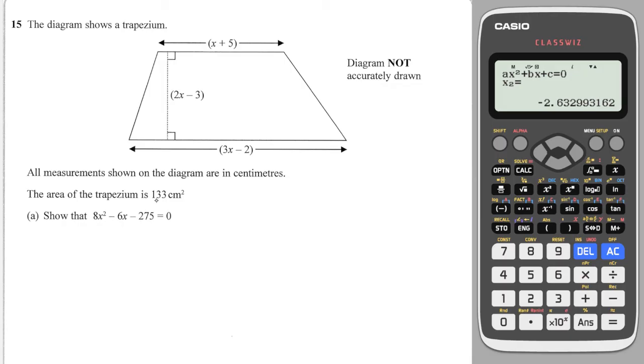So, we know the area of the trapezium is 133. We also know from our formula sheet the area of a trapezium is a half, the two parallel sides added together times by the gap between them.